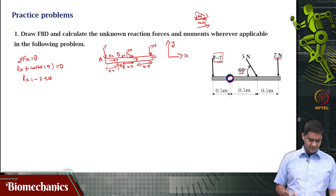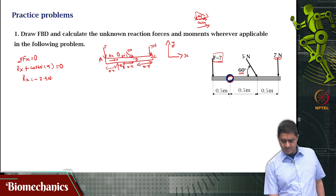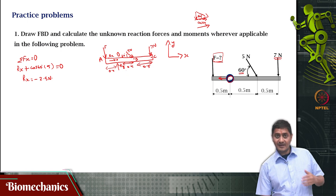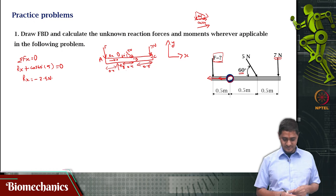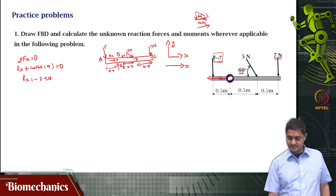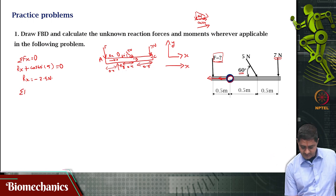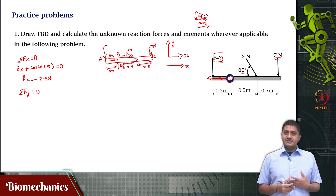What does minus 2.5 Newtons mean? That means the force is going in the opposite direction — it is not being applied in the positive X direction, but rather there is a pull happening in the negative X direction with that magnitude. So RX is minus 2.5 Newtons for the positive X axis. Now I can write the next equation of static equilibrium: sigma FY = 0, because this object does not accelerate in the Y direction.